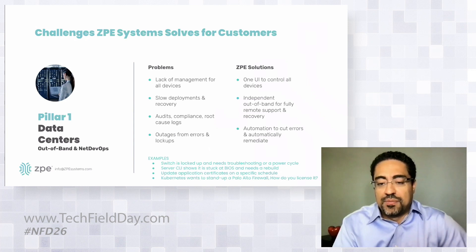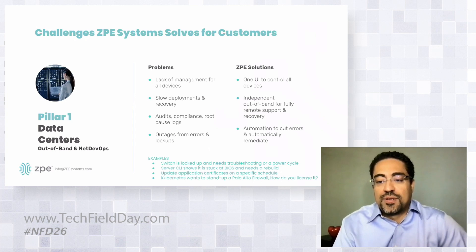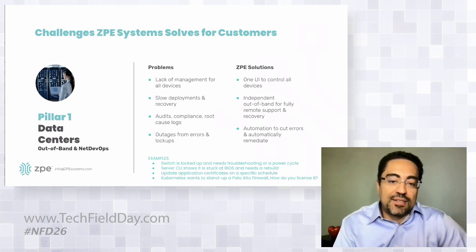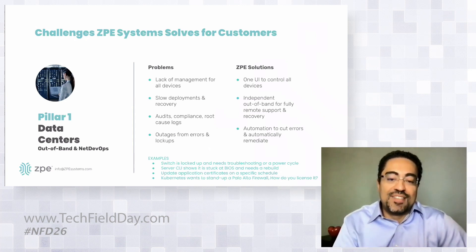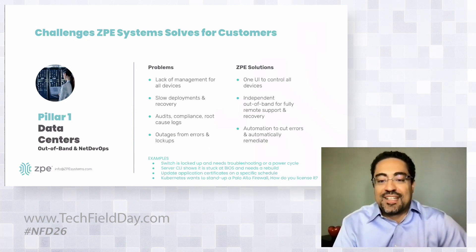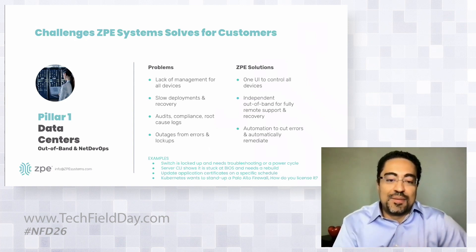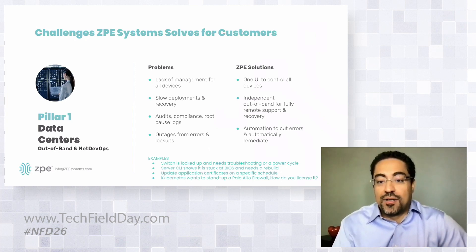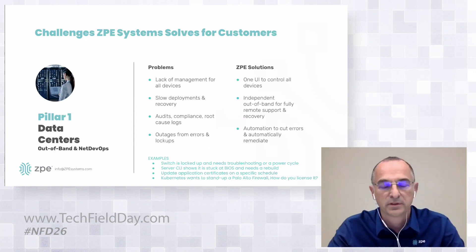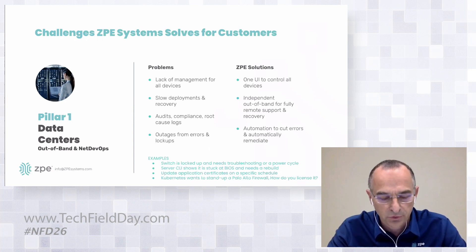Another challenge: a Palo Alto firewall securing a bunch of workloads — to stand up a new one you need to license it, rebuild it, and re-image it. How does that get done? These are the little steps in the cycle of life that often get skipped from a manufacturer's point of view, and that hampers network automation.